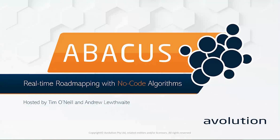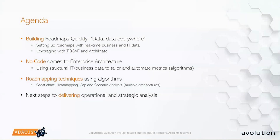Thanks Simon. I'm Tim O'Neill and I have my colleague Andrew with me. The next slide gives us a brief agenda and bio, so I'll leave that to introduce us formally. Today we're going to be looking at no-code algorithms with a particular focus on how they can support roadmapping in enterprise architecture. We'll give some background on roadmaps in general, the different ways they're defined, and how standards provide guidance. Then we'll put a no-code flavor on them, so these roadmaps aren't just pretty pictures — they have science and numbers behind them.